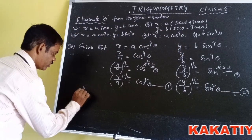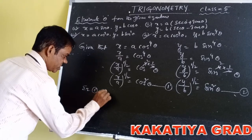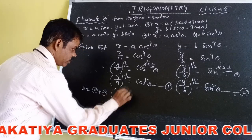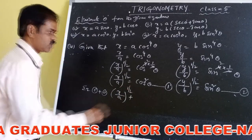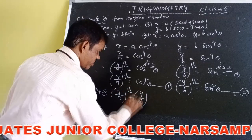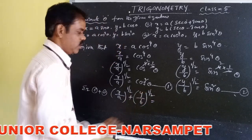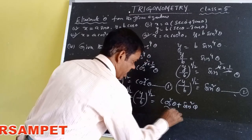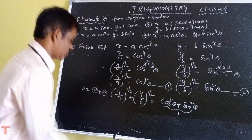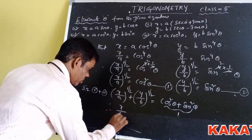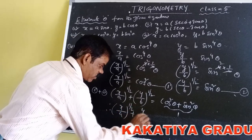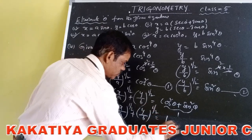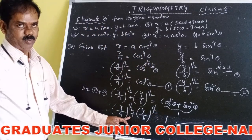Adding equation 1 and equation 2: (x/a)^(1/2) + (y/b)^(1/2) = cos²θ + sin²θ. This value equals 1. Therefore, (x/a)^(1/2) + (y/b)^(1/2) = 1. Theta is eliminated.